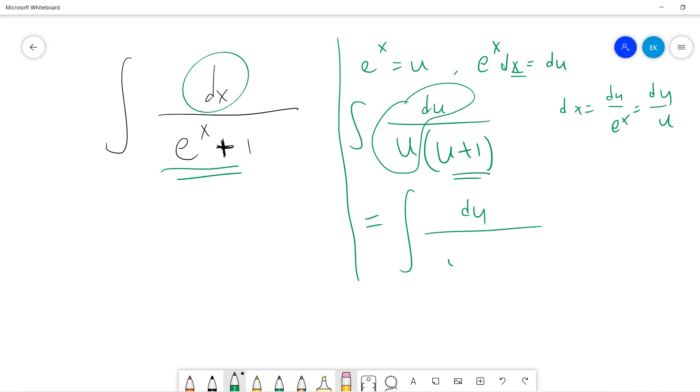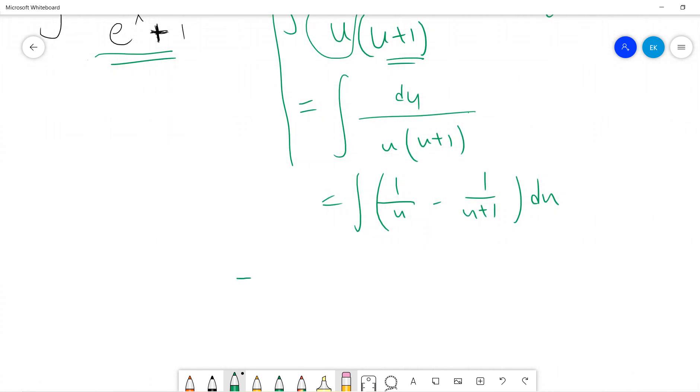So dx is du divided by exponential x, so it's du divided by u. So this is just this. Okay, so we got du over u plus 1, right? So up to now, it's easy to do. You just get u minus u plus 1: 1 divided by u minus 1 divided by u plus 1, and du. Okay, so it's ln u minus ln(u plus 1) plus constant.